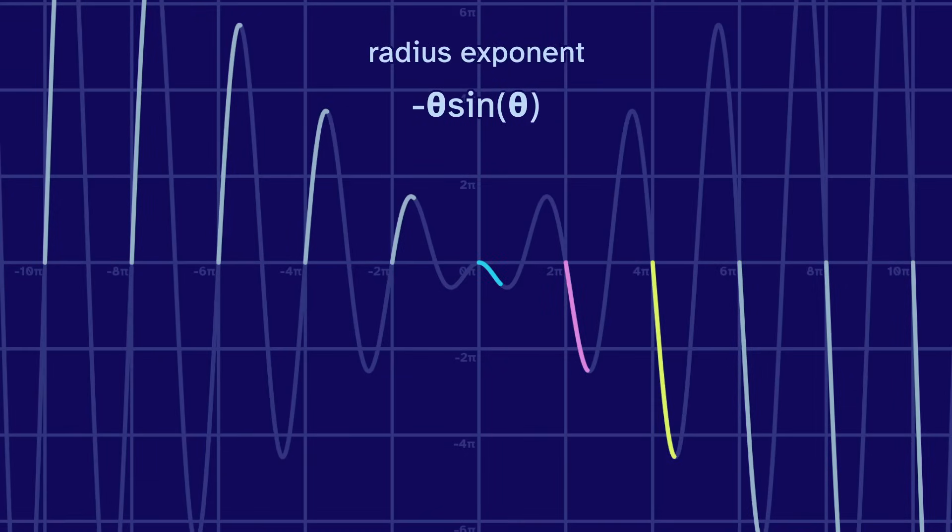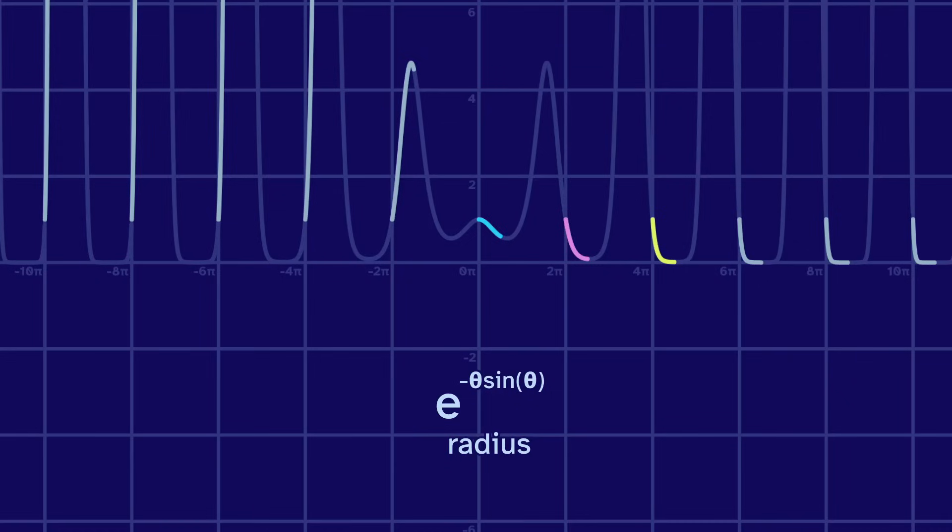It looks similar to the earlier graph. Now let's limit to the first quarter of the circle. Each lap we start at 0 and then drop into the negatives, getting further each time. So if we take e to this power, each lap starts at 1 and then drops down closer and closer to 0 each time. And that explains why we always start at the same point, then get closer to 0.